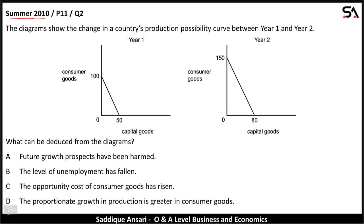The next MCQ is from Summer 2010, Paper 11, Question 2, and the topic is the production possibility curve. The diagrams show the change in a country's production possibility curve between Year 1 and Year 2. One diagram is given for Year 1 and another for Year 2.